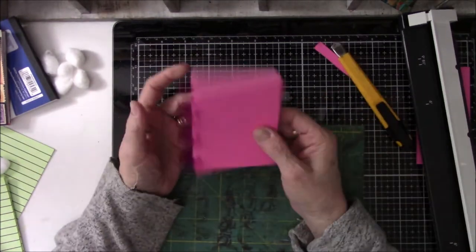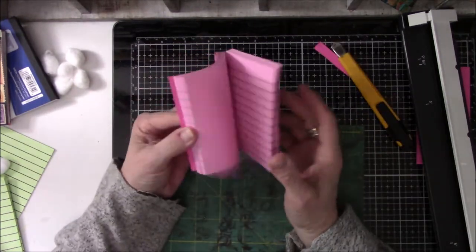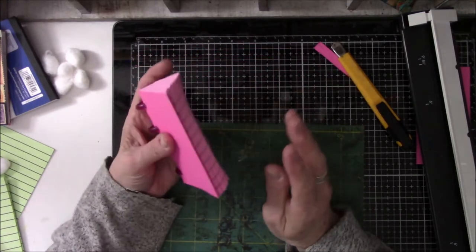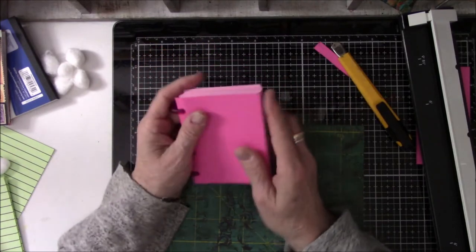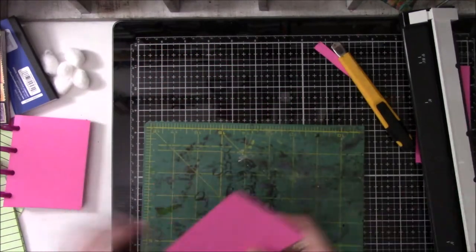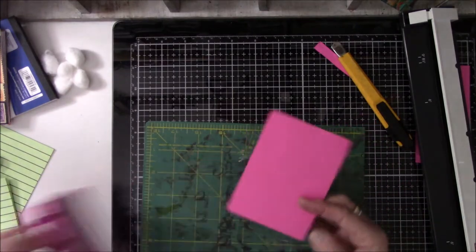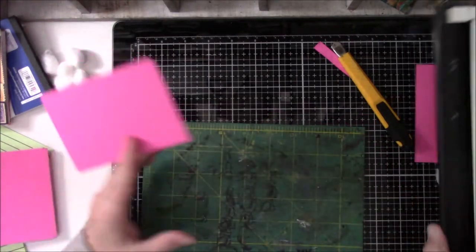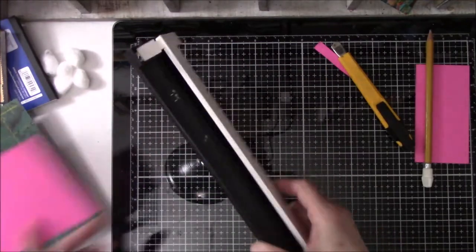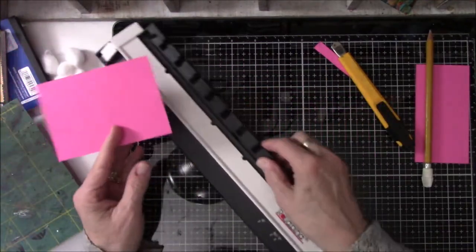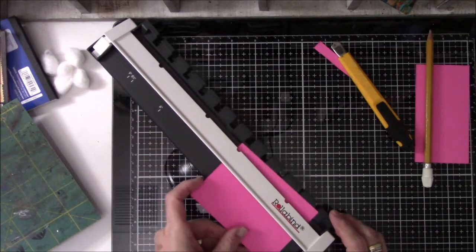All right, let's try this again. So we're going to put this in here, butt it up against the end, because that's where I did all the original paper. Now if you want to do it in the middle for something, for six inch paper, they give you the guidelines here, but I just butted it up to the end, and it worked out perfectly. All right, and then snap that down. Push this back, see, this goes back, folds in, folds out, folds in, and this goes here.